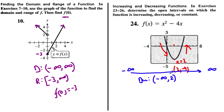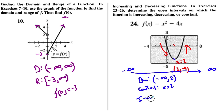At x = 2, what happens? It is constant, if only for a brief instant, just at x = 2. So we would say it's constant at the point (2, negative 4), or just at x = 2. Think about it this way: decreasing means negative slope, increasing means positive slope — and between negative and positive is zero, or constant. So our increasing interval starts at, but does not include, x = 2 and heads off to positive infinity.